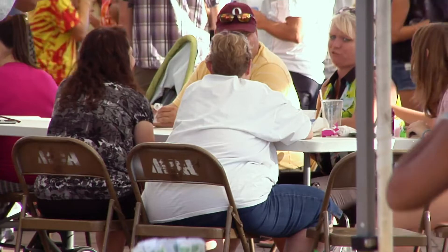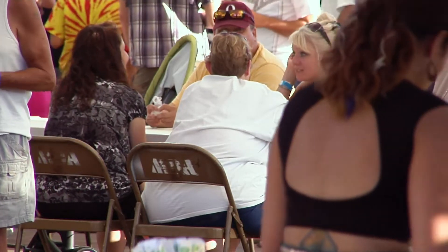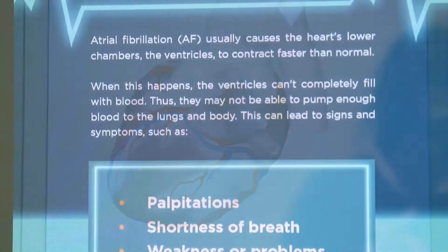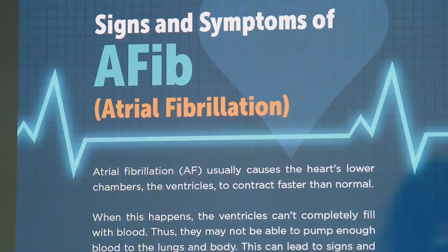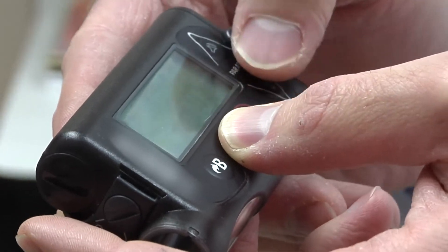Obesity is a major risk factor for heart disease. About 35% of all Americans meet the category of obese. With obesity comes increased risk for high blood pressure, abnormal cholesterol, and also things such as sleep apnea, which can increase the risk for certain heart abnormalities like atrial fibrillation. One of the other problems with obesity is it leads to diabetes, and diabetes is a major risk factor for heart disease.